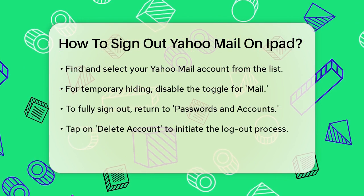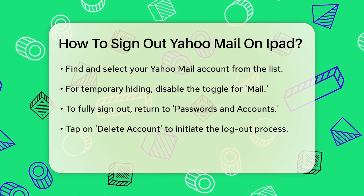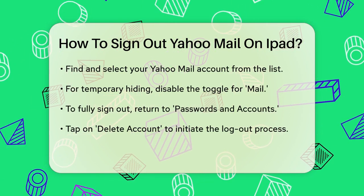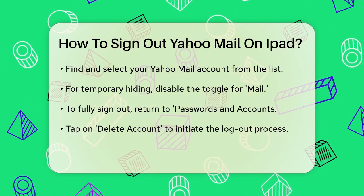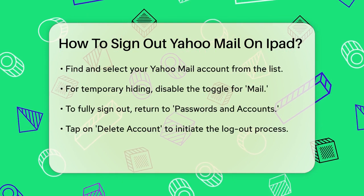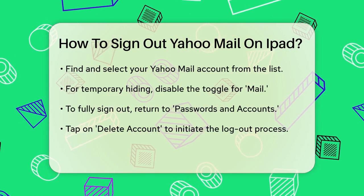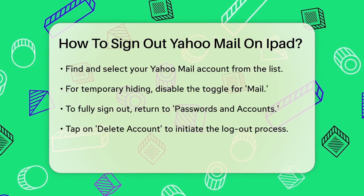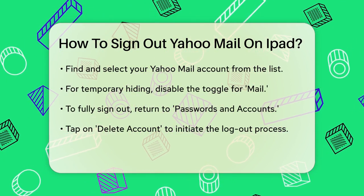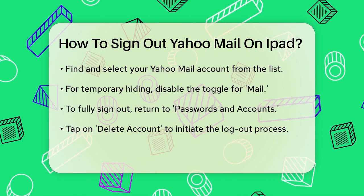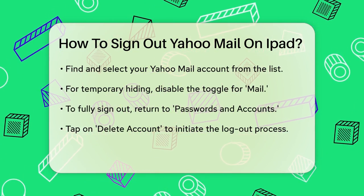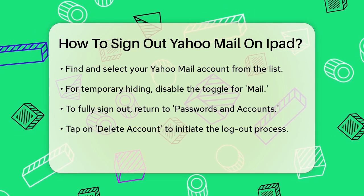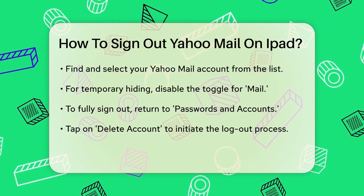Tap on it to open the list of your email accounts. Under the Accounts section, you'll see your Yahoo Mail account listed. Tap on it to select it. If you only want to temporarily hide your email account from the Mail app, you can disable the toggle for Mail here. However, if you want to fully sign out, you'll need to take a few more steps.